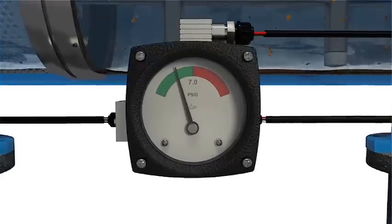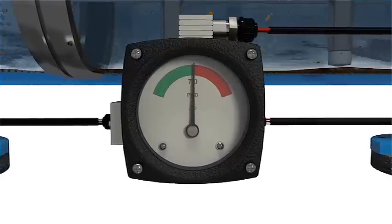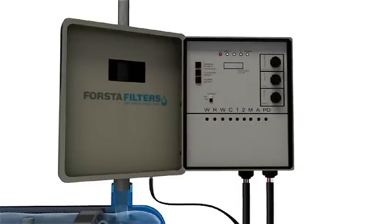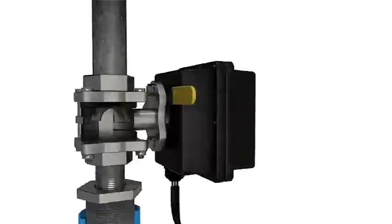When enough debris builds up on the screen, differential pressure develops between the inlet and outlet of the filter. Once 7 psi of differential is reached, the automatic controller opens the flush valve and initiates a backwash sequence.